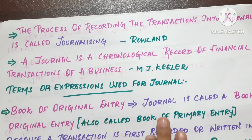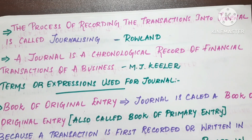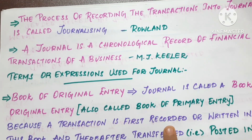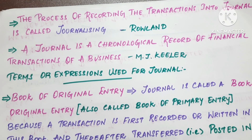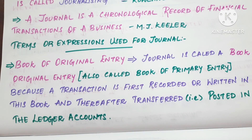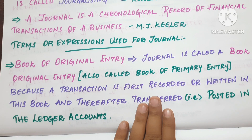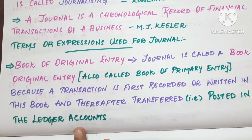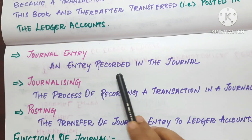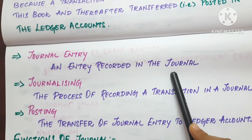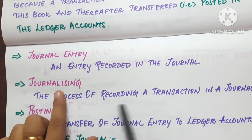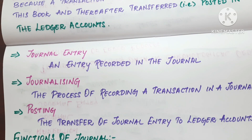Next, we will see the terms and expressions used for journal. The journal is called a book of original entry. The entry recorded in the journal is called a journal entry. We will see each transaction recorded as an entry.